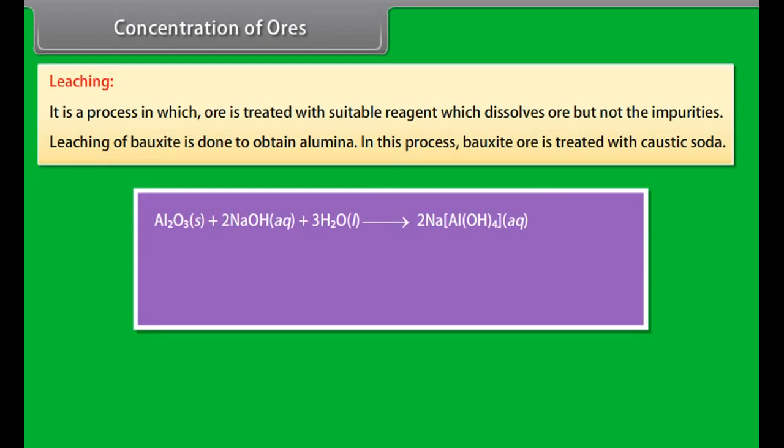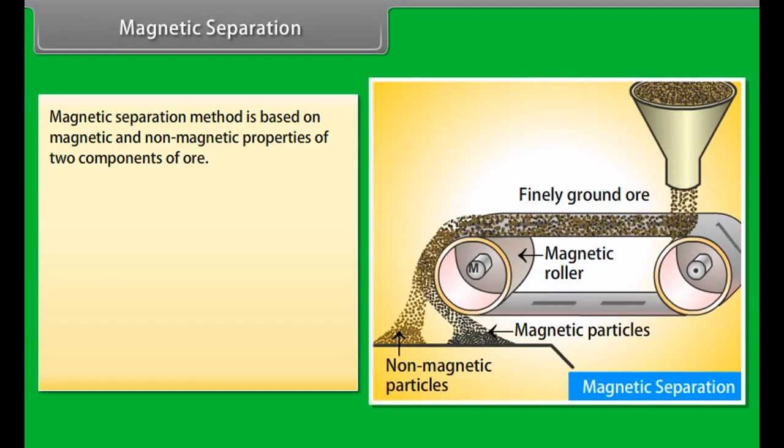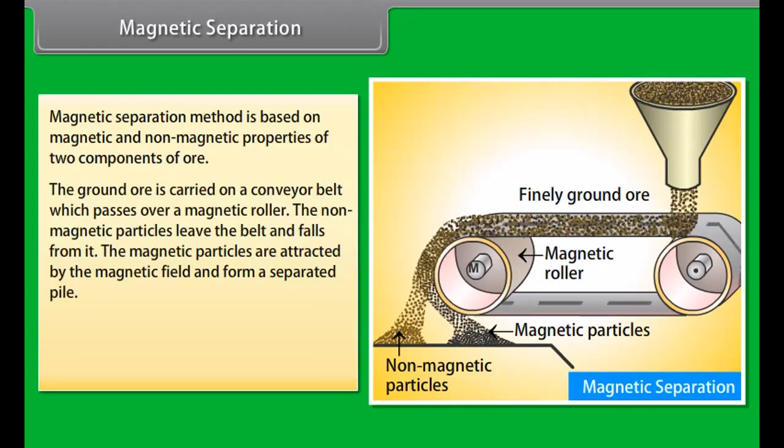Leaching of bauxite is done to obtain alumina. In this process, bauxite ore is treated with caustic soda. Al2O3 dissolves in concentrated solution leaving behind impurities. The aluminate in solution is neutralized by passing CO2 gas and hydrated Al2O3 is precipitated. The precipitate of Al2O3 is filtered, dried and finally heated to about 1470 Kelvin to obtain pure Al2O3.